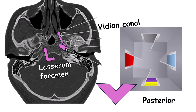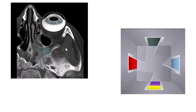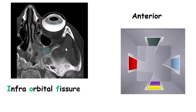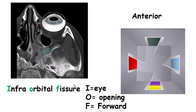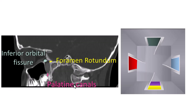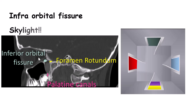Now we are at the anterior door. The anterior door is the inferior orbital fissure. You can remember this because the eye is anterior to the pterygopalatine fossa. For remembering the inferior orbital fissure name, starting with the letters I, O, and F, you can remember it as 'eye opening is forward.' But it's a little more complicated than that — while the inferior orbital fissure is anterior, it is also a little superior, more like an anterior skylight than a door. So if you look from the posterior doors — through the foramen rotundum or the vidian canal — you can see the inferior orbital fissure in front of you on the ceiling.